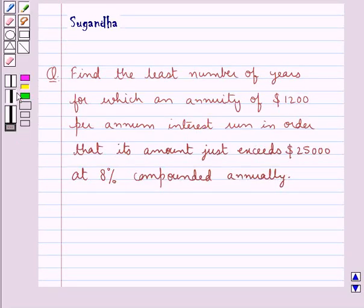Hello and welcome to the session. In this session we discuss the following question which says find the least number of years for which an annuity of $1200 per annum interest run in order that its amount just exceeds $25,000 at 8% compounded annually.